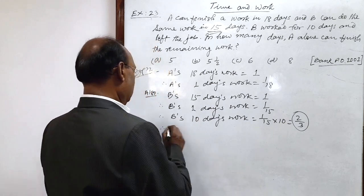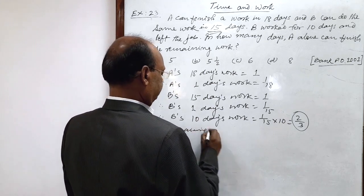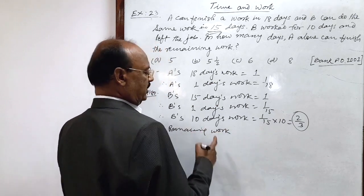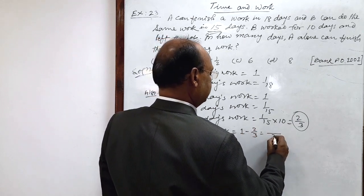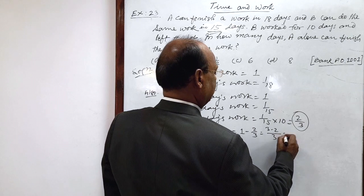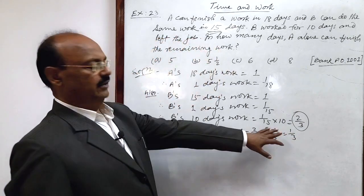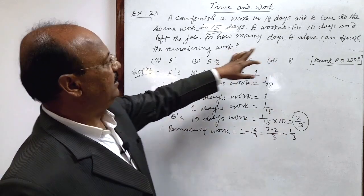Therefore, remaining work after doing B's 10 days work: remaining work is 1 minus 2 by 3. LCM will be 3, 3 minus 2, that is 1 by 3 work is left. This is remaining which has to be completed by A.